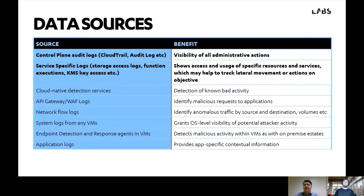For service-specific logs, these are logs generated by your S3 buckets, Lambda functions, KMS key access — cases where cloud-native PaaS services are generating their own logs, which tend to be very high fidelity but also generate a lot of data. We find clients benefit from turning these on on a case-by-case basis. You might have an S3 bucket full of really important information where access logs are worthwhile. But if you've got an S3 bucket serving out static content for a website, you probably don't need those logs — it's about enabling them selectively rather than blanket drowning your analysts in data.